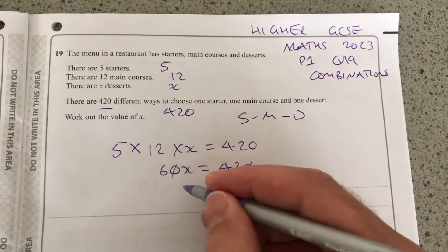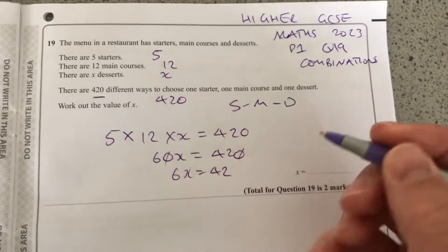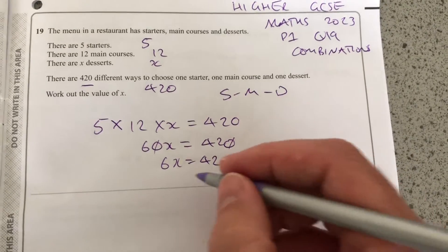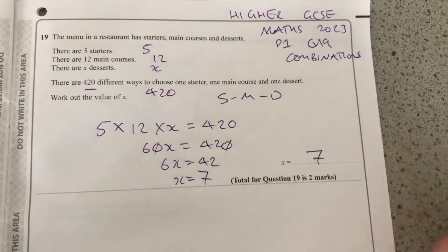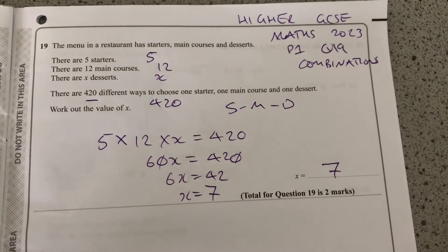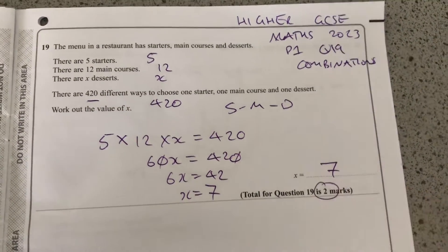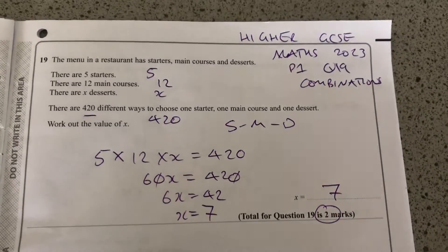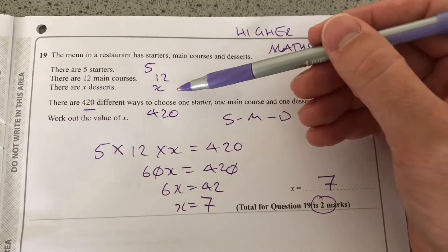I can drop a 0 on both. 6x equals 42. I know my 6 times table. x is 7. So there are 7 different desserts to give us that many combinations. It's a two-mark question. And there we go. 5 times 12 times x is 420.